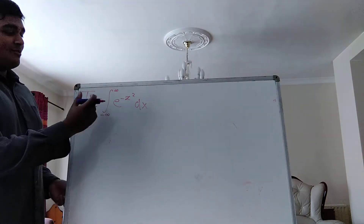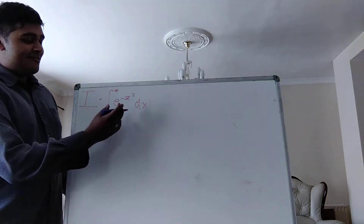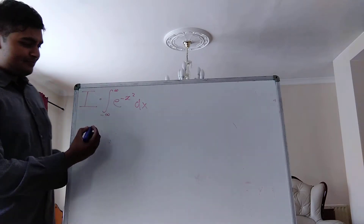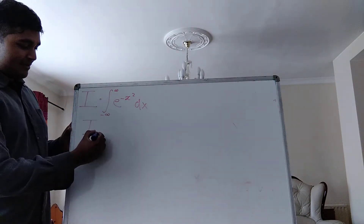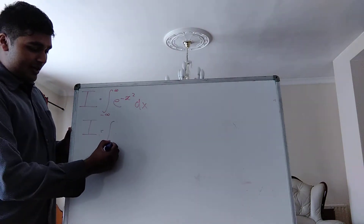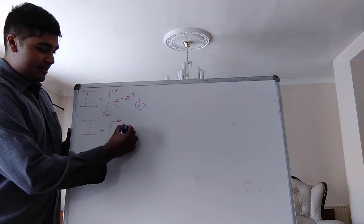So this is the integral — the integral from negative infinity to infinity of e to the negative x squared dx. Now, x here is a dummy variable, so I can replace it with y, and that doesn't change its value.